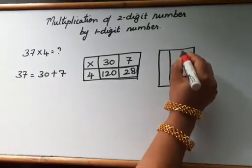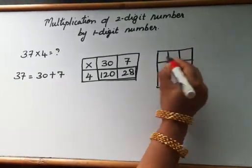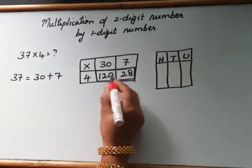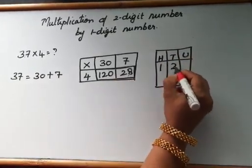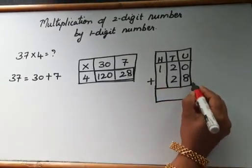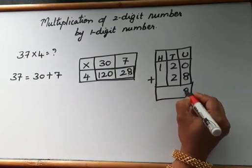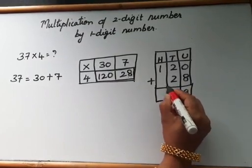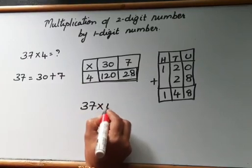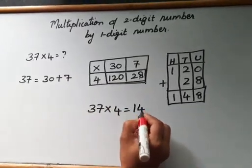So let us draw a box and write its place value, that is hundreds, tens and units. Now let's add the number 120 plus 28. 0 plus 8 is equal to 8. 2 plus 2 is equal to 4. And 1 plus 0 is equal to 1. So 37 multiplied by 4 is equal to 148.